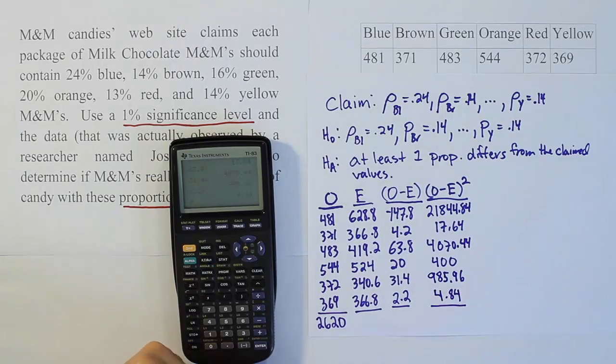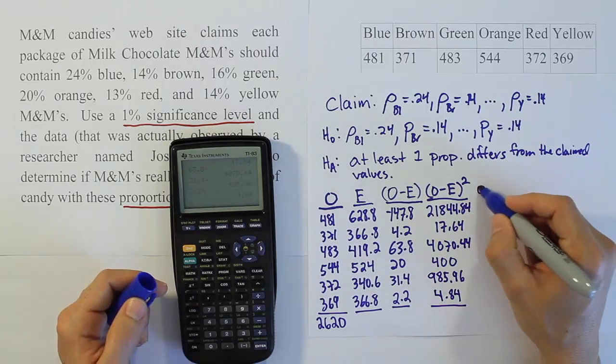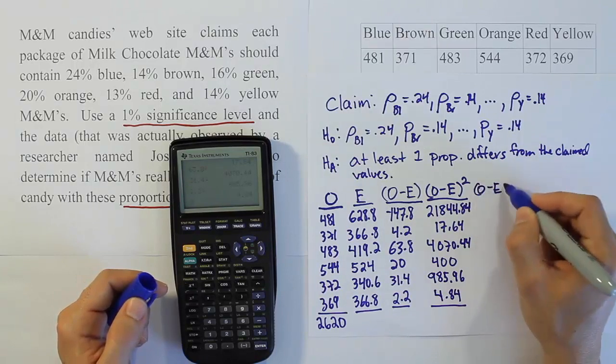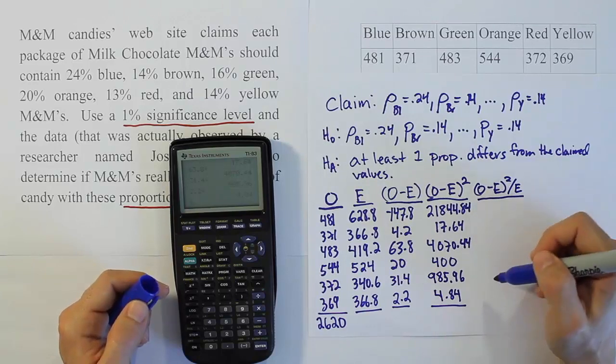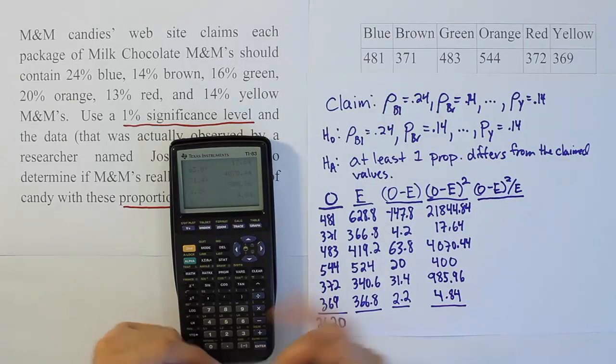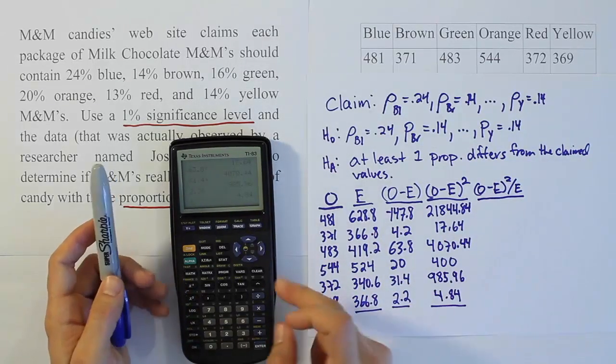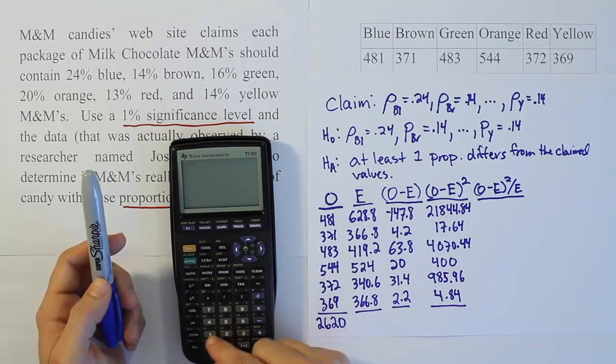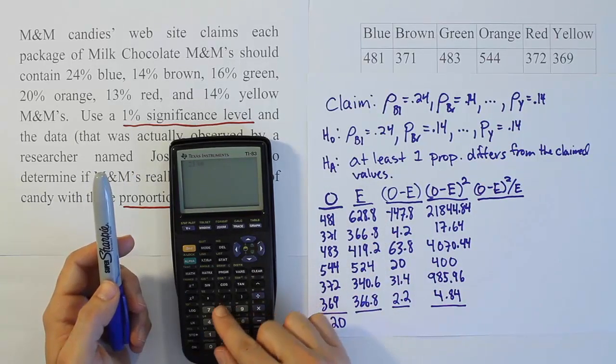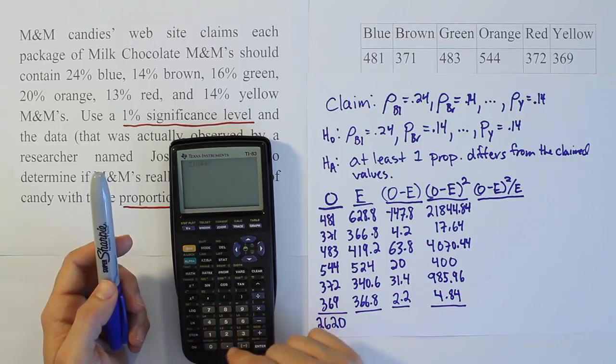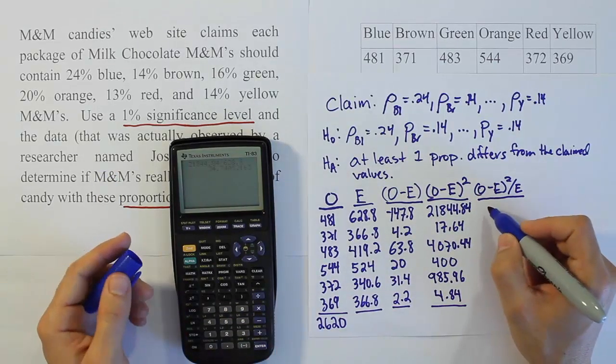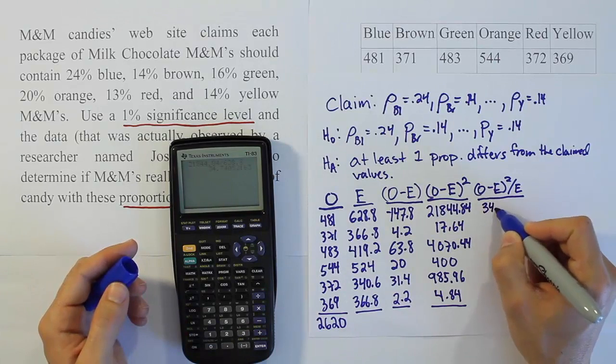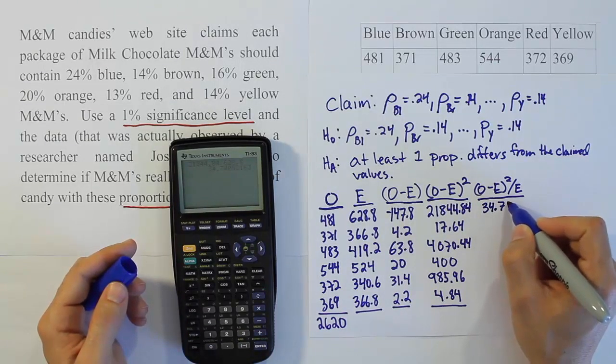Our next column, the most important, is observed minus expected quantity squared divided by E. This column gives us our test stat ultimately. We need to calculate each divided by the expectations. This is a lot of work, which is why this type of problem is often done with software - graphing calculator, SPSS, SAS, or even Excel.